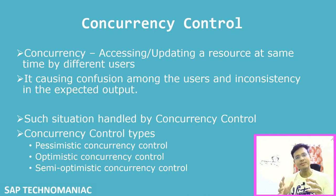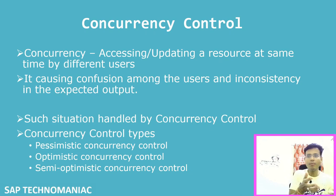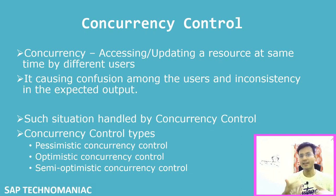Sometimes multiple users want to update the same table — same fields or different fields on the same data. In that scenario, if user one updates the data and then user two updates the data, user one will not be able to see whatever they updated, because user two has overwritten that particular data. This creates a lot of confusion when we work in real-time.